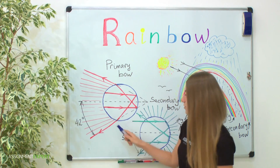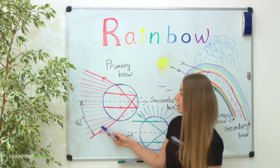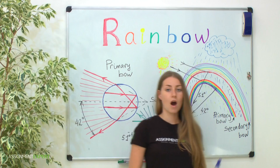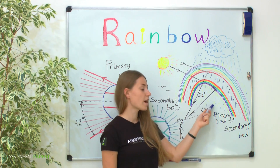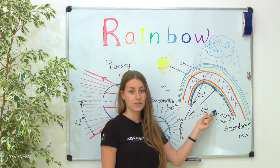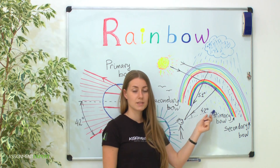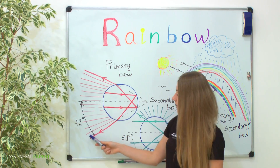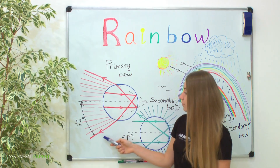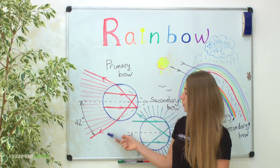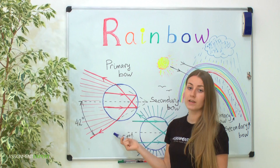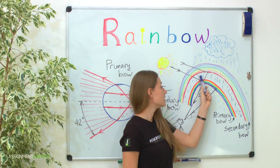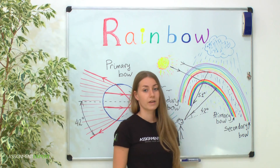Light also enters at angles smaller than 42 degrees, so our observer will see this part of the sky being illuminated, but less intensively. At angles greater than 42 degrees there is no outgoing light, so this part of the sky appears darker.